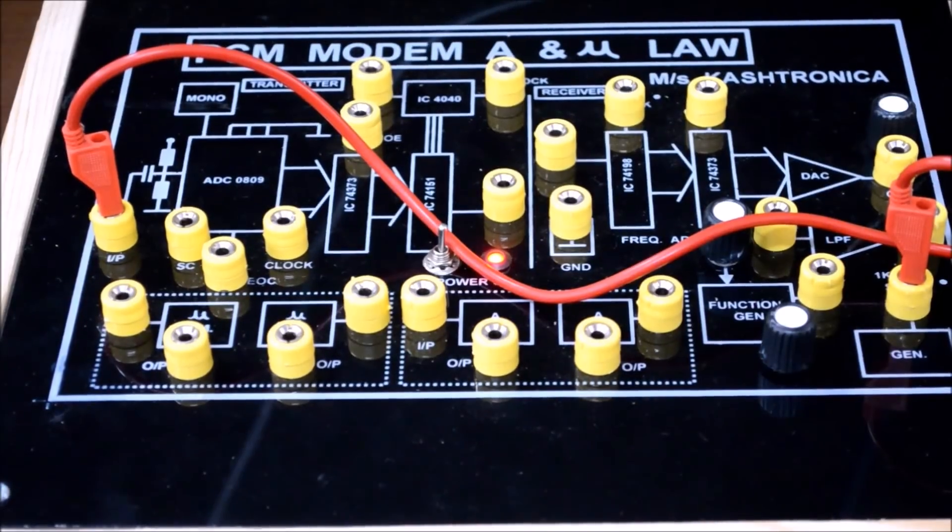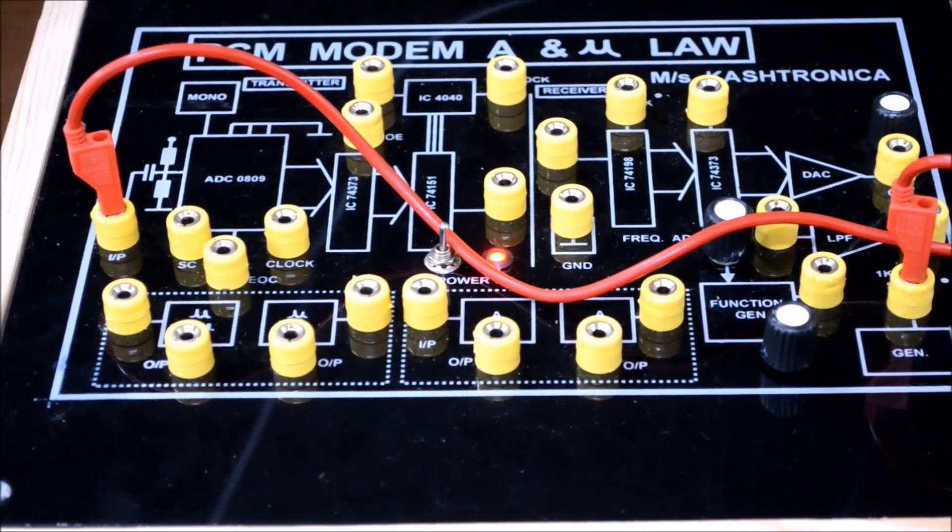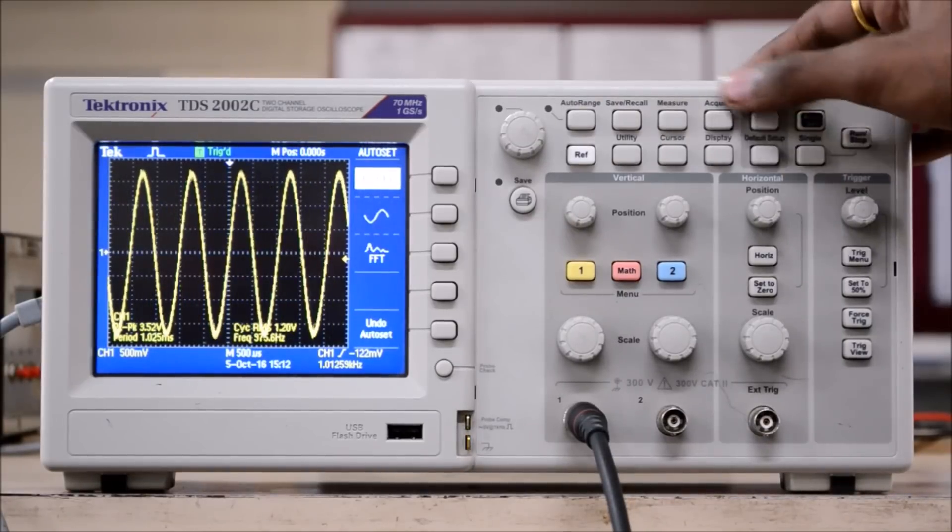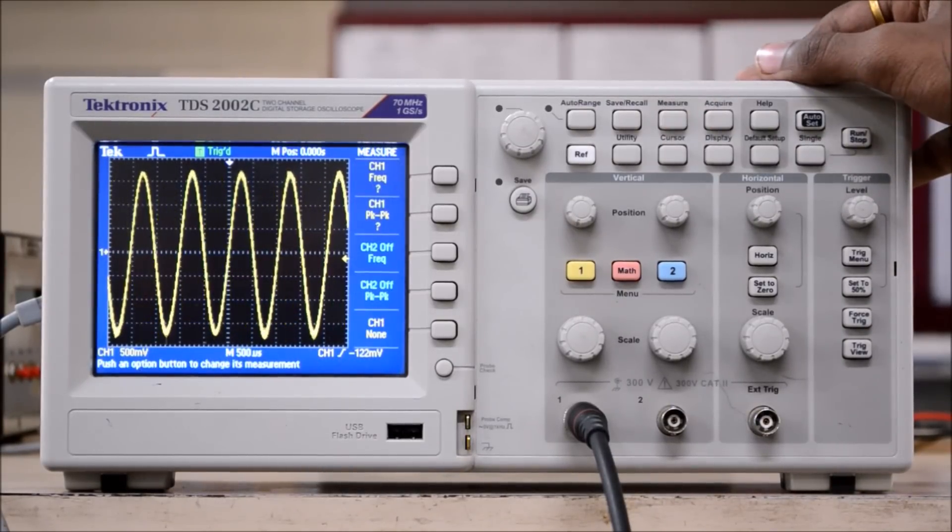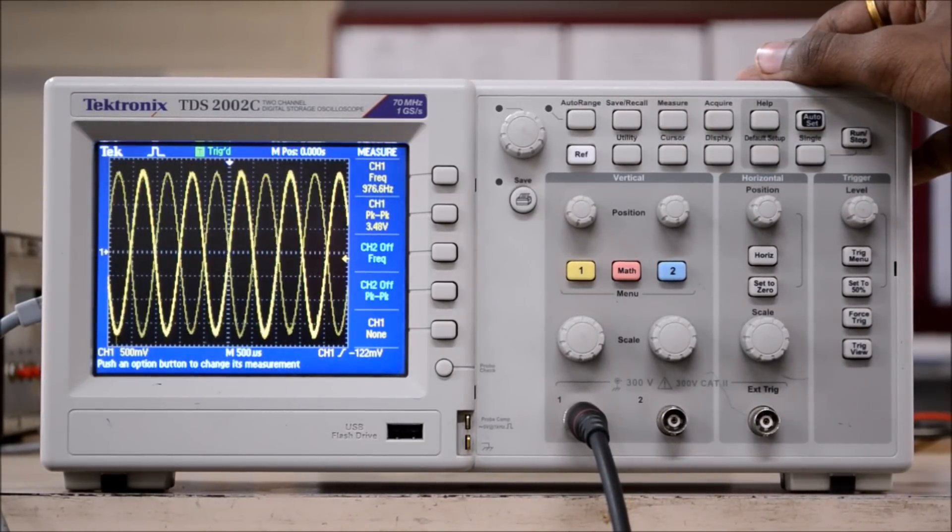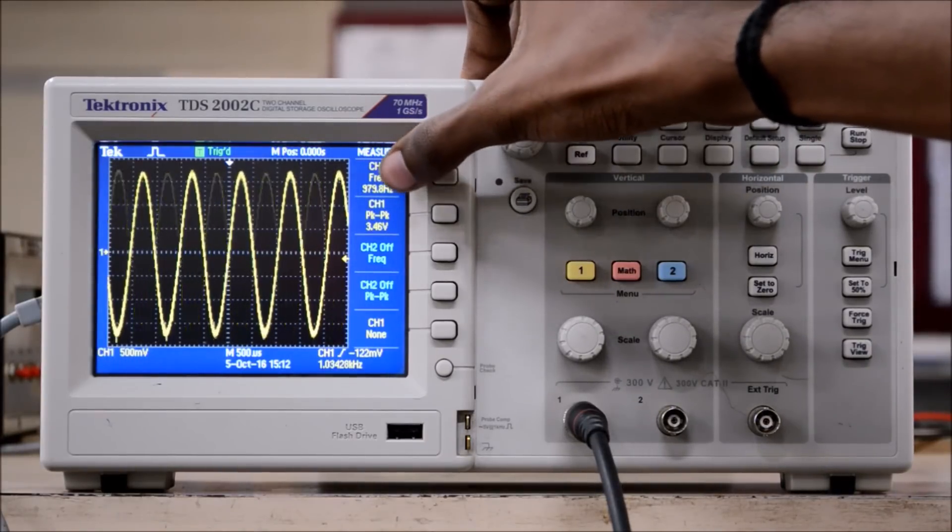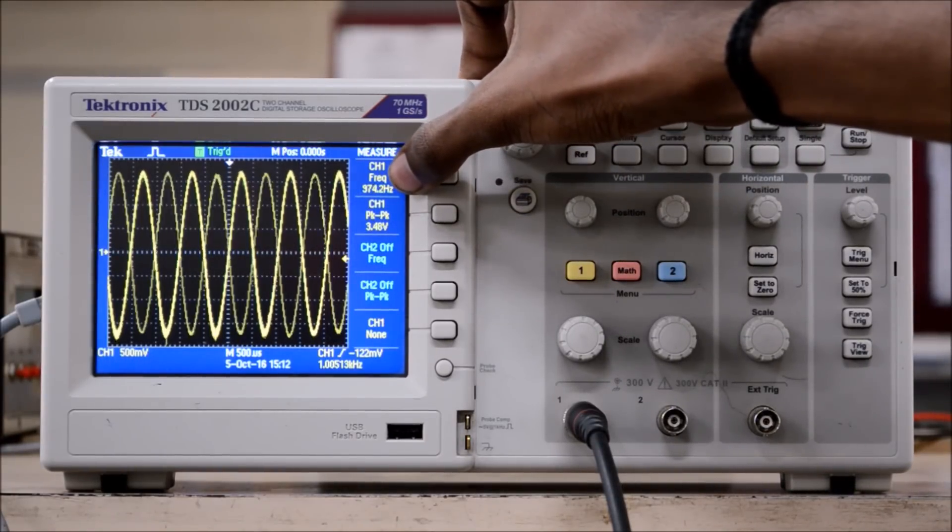We also need to measure the frequency and amplitude of this signal. So connect this signal to the probe by pressing the measure button, you'll get the amplitude and frequency. And note down this frequency and amplitude. It is around 1 kHz and the peak to peak voltage is around 3.52 volts.